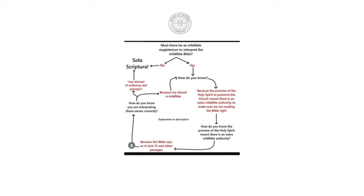The issue starts with the way the question is posed at the top. On their diagram they have 'must there be an infallible magisterium to interpret the infallible Bible?' and they pose it this way intentionally to make it where either you end up in a circular argument from the Catholic position or you end up with sola scriptura. The problem is the way the question is posed. It's the wrong question to start with.